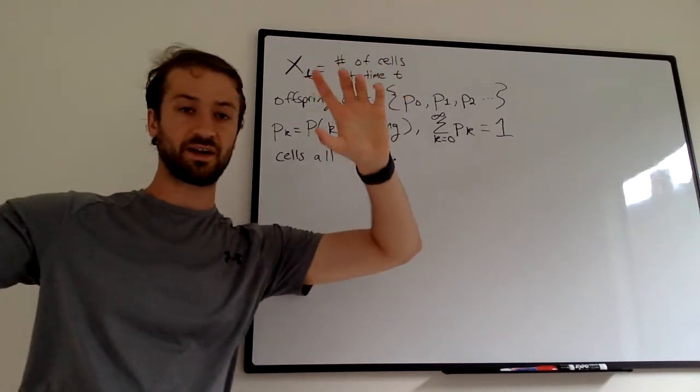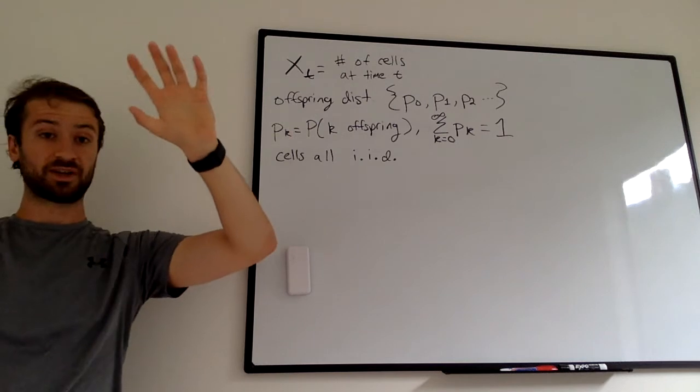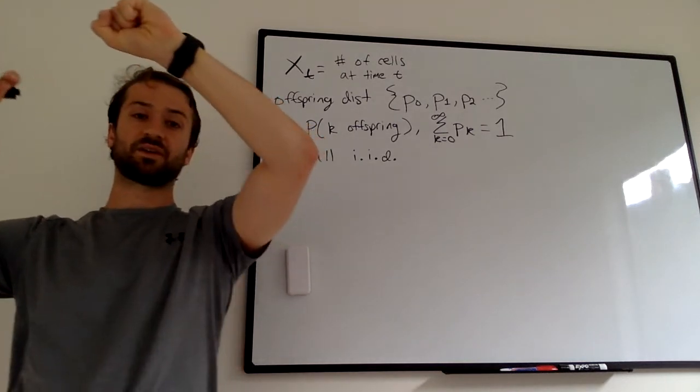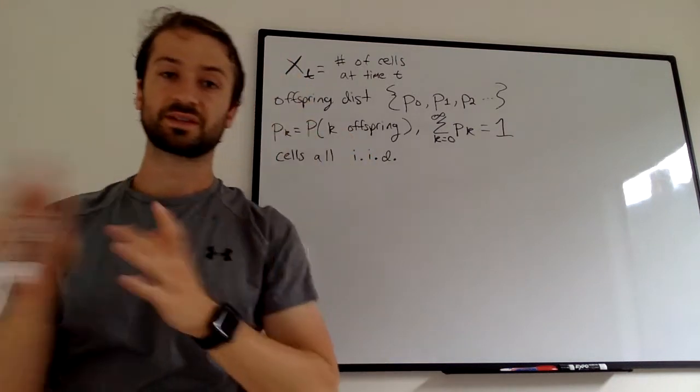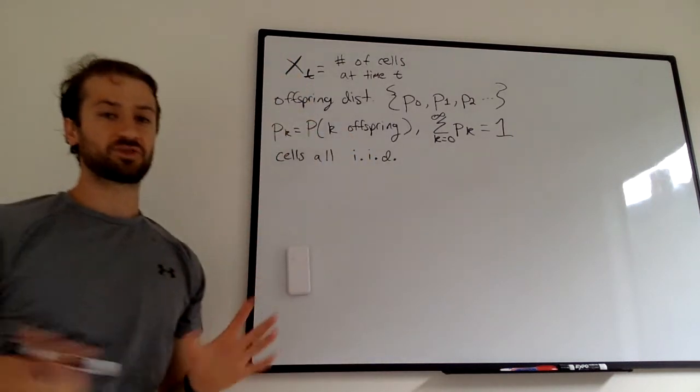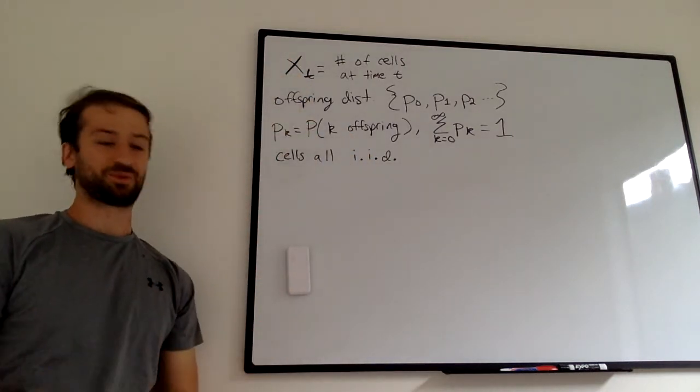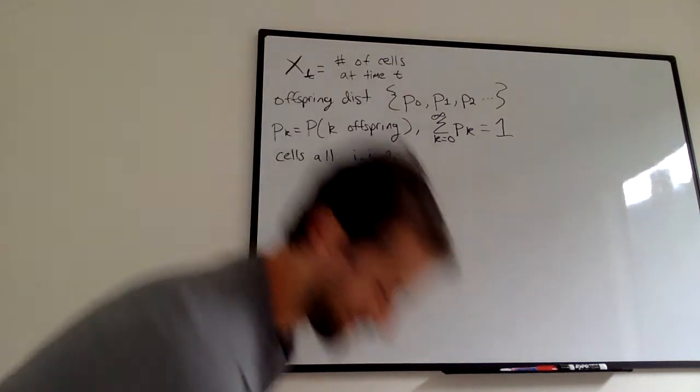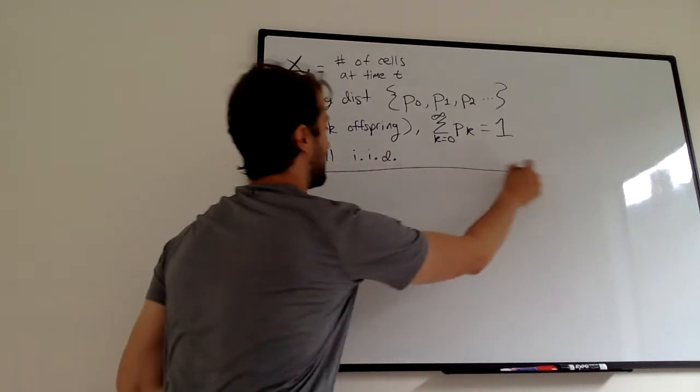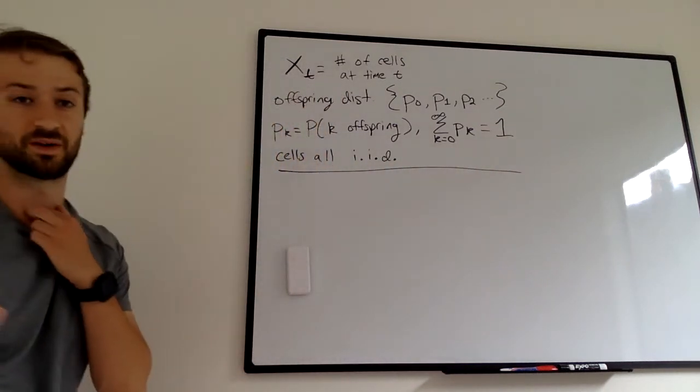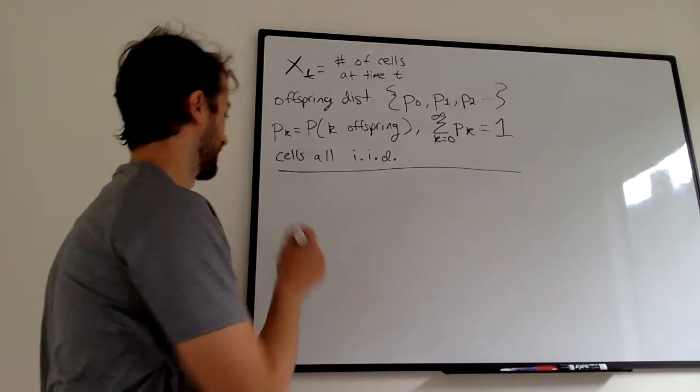Knowing one cell doesn't change another cell in the same population and the same generation. If you know one cell divides into three cells, then it doesn't change the probability for other cells. It would get very complicated if those were not independent and identically distributed. So that's our setup, and this is all pretty abstract. So we're going to think of some simple examples.